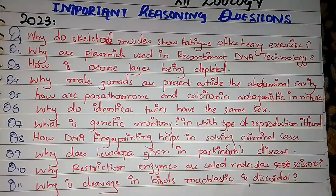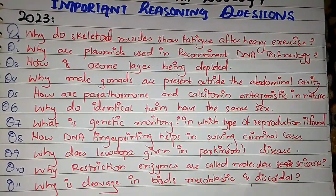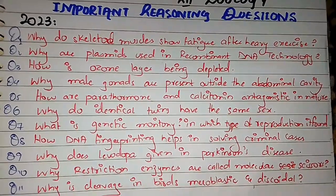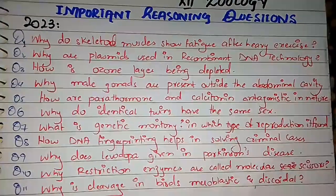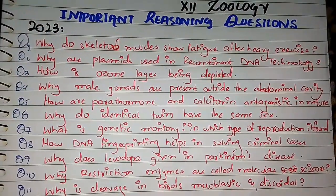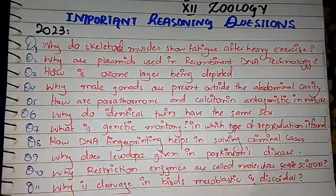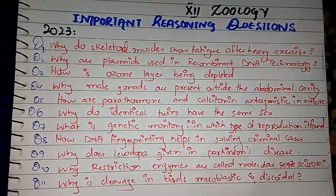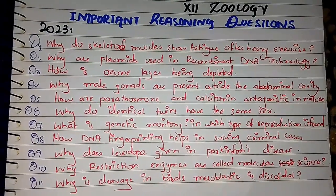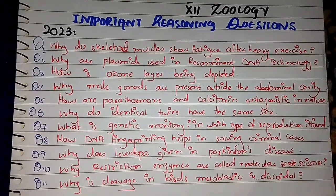The outer shell and membrane restrict division up to the blastodisc. That's why we say this is discoidal type and shows meroblastic and discoidal type cleavage. These questions are the most important reasoning questions for board exam 2023.